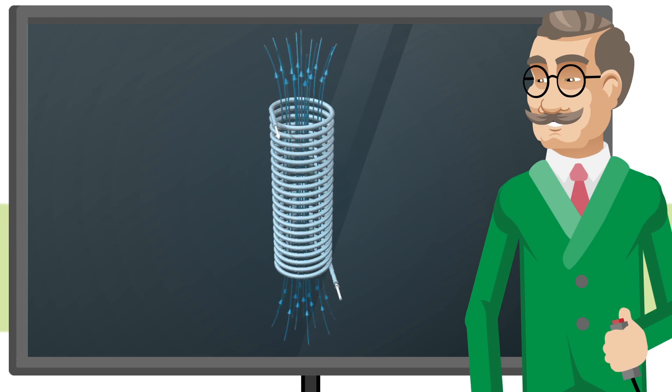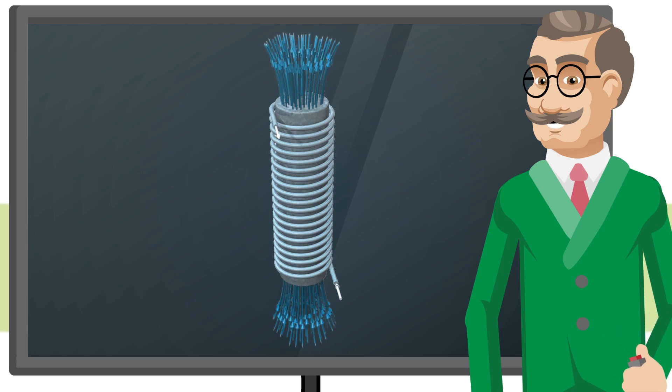The magnetic field lines are multiplied. The magnetic field can be amplified even more by placing ferromagnetic material inside the coil. A coil with a ferromagnetic core is what we call an electromagnet.